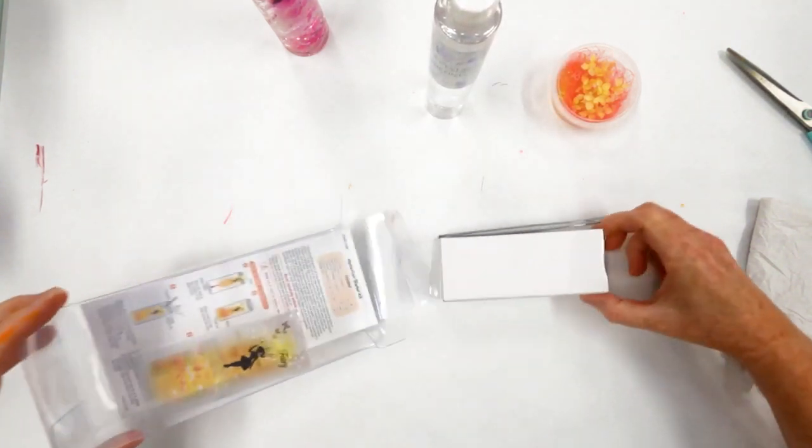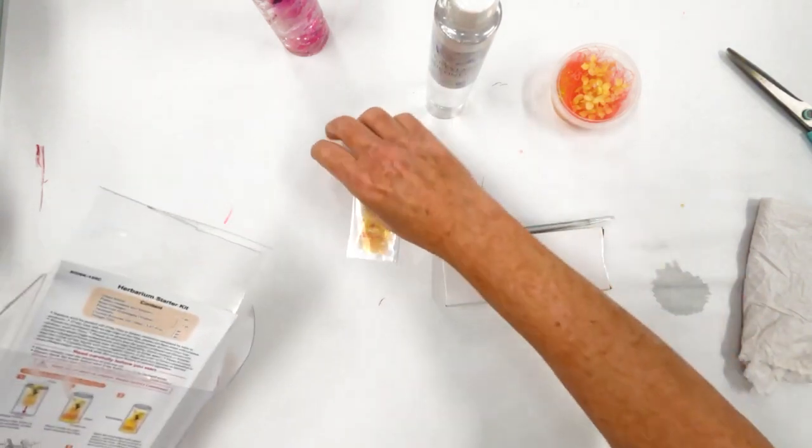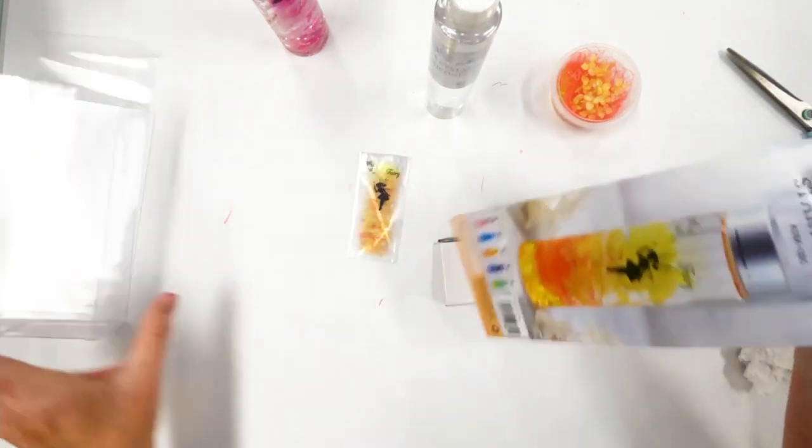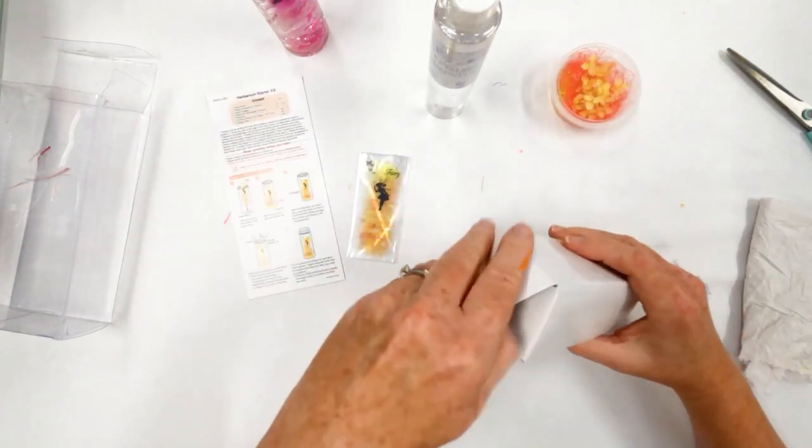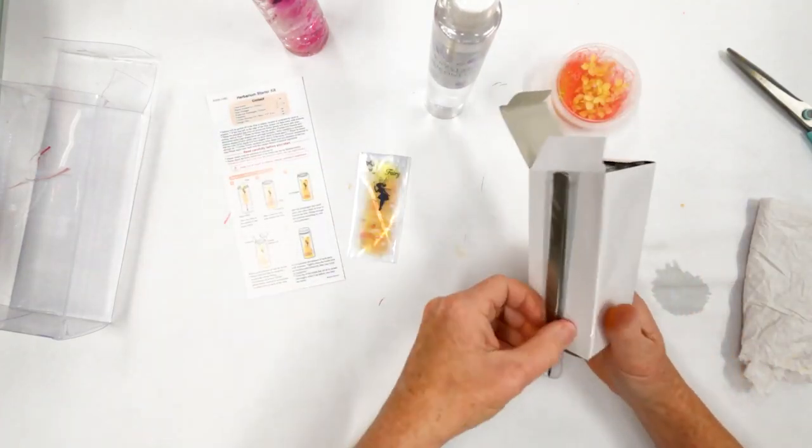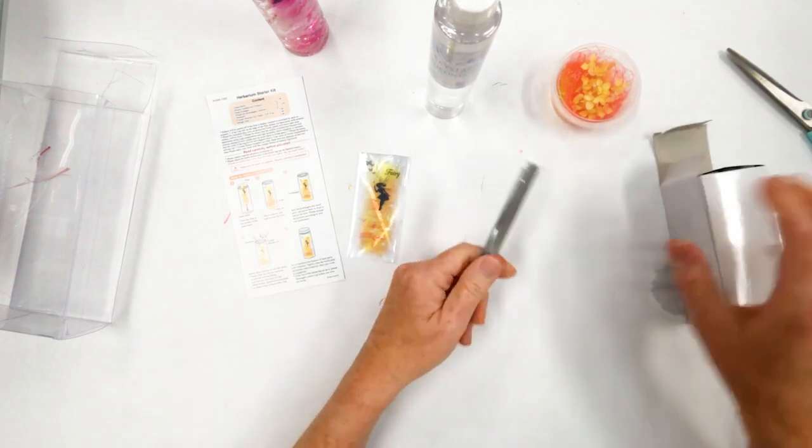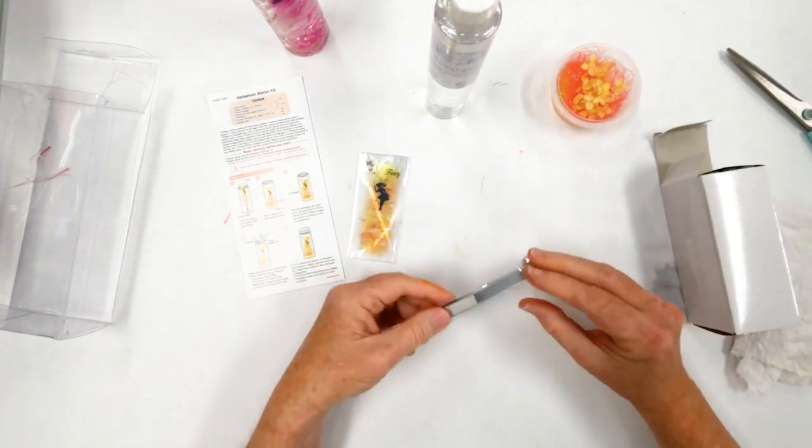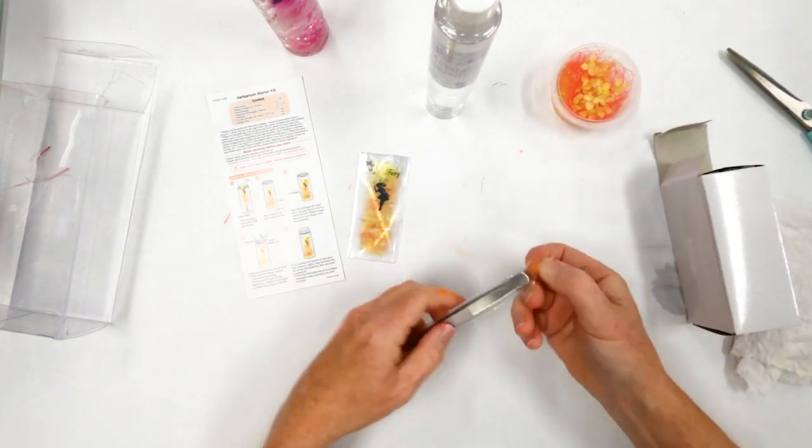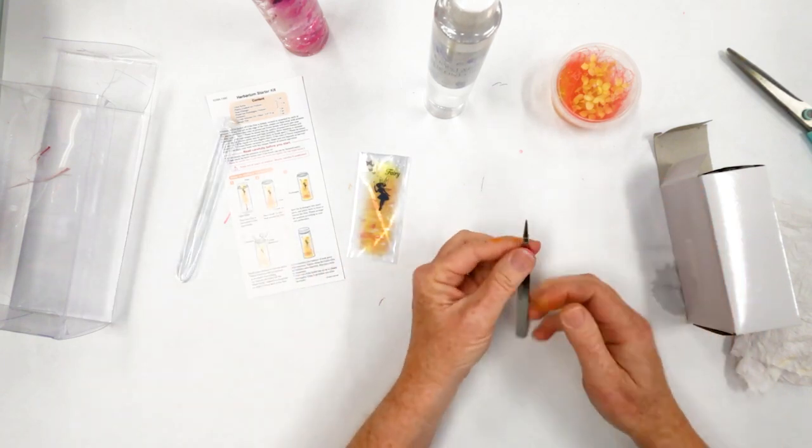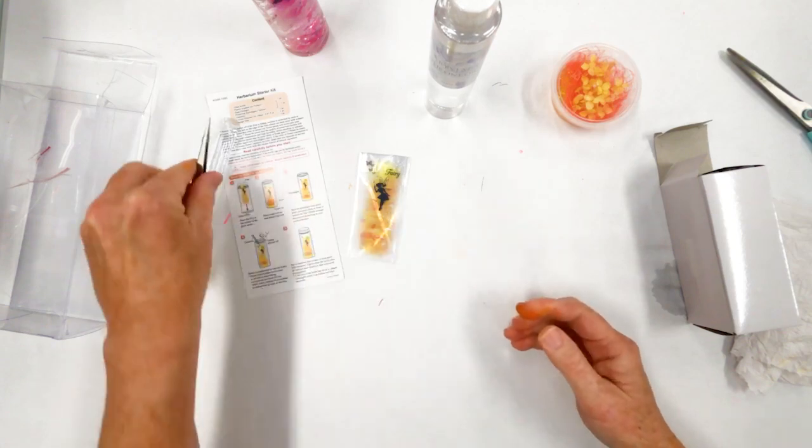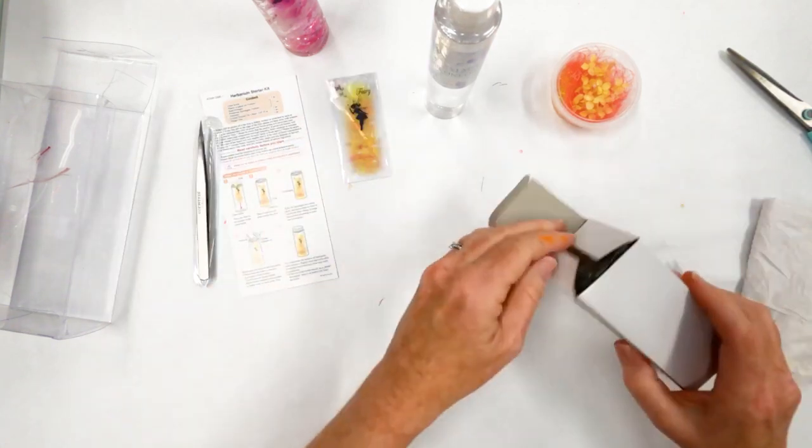And what else do we have in here? We have some film. We have our instructions on the back of this. And then tweezers. Get a nice pair of tweezers. I'm going to go ahead and take those out of the little case. These are pointy and it has a little protection thing there that keep them closed.